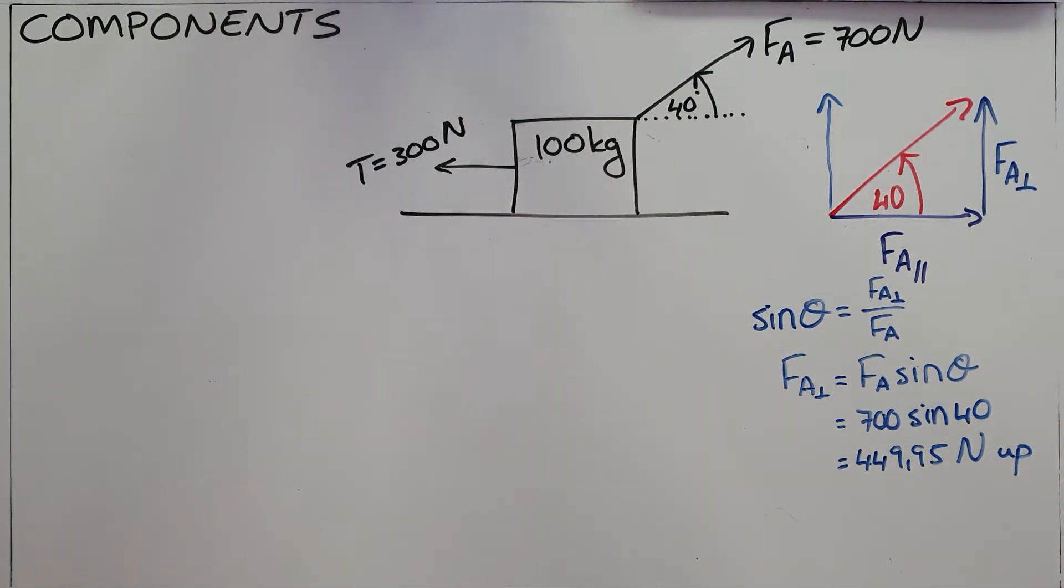In the same way, we can calculate F_A parallel by saying that since that is the adjacent side over the hypotenuse, F_A parallel, the component of A that acts parallel to the surface, is equal to F_A cos of theta. In this case that is 700 cos of 40, which is 536.23 newtons, and that is acting to the right.